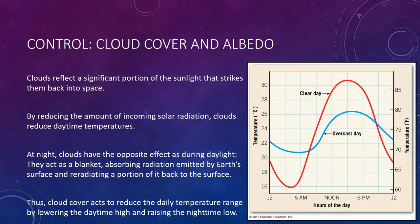Clouds are not the only phenomenon that increases albedo and thereby reduces air temperatures. Snow and ice-covered surfaces also have high albedos. This is one of the reasons mountain glaciers do not melt away in the summer and why snow may be present on a mild spring day. During winter, when snow covers the ground, daytime maximums on a sunny day are less than they would otherwise be, because the energy that the land would have absorbed to heat the air has been reflected away.